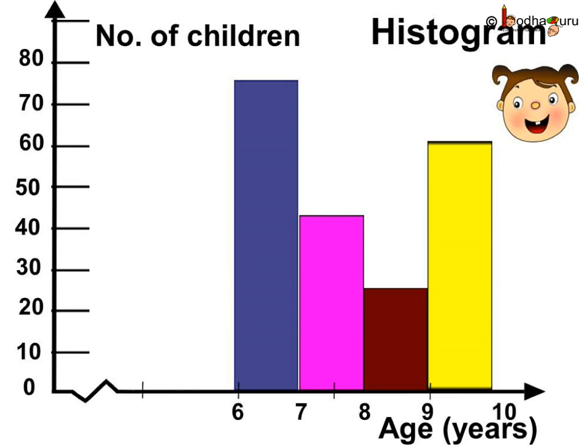So now you know, if the data is continuous then a histogram is a better way to represent data compared to a bar chart. In this case there will be no gap between the bars as the data is continuous. A histogram is a bar graph that shows the data in intervals.